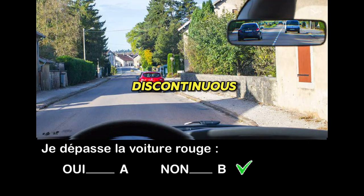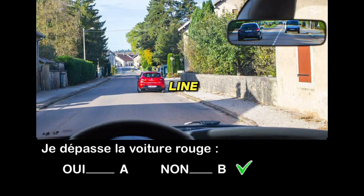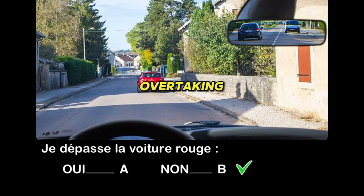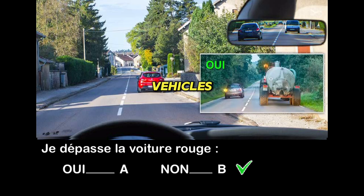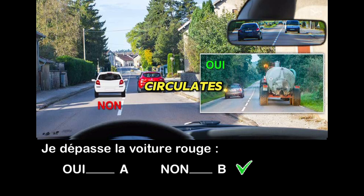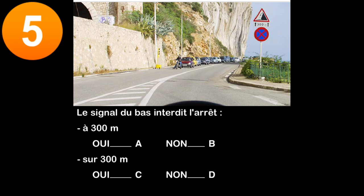Question four: do I pass the red car? Yes (A) or no (B)? The discontinuous line with tight strokes is a deterrent line drawn in dangerous places. It replaces a continuous line to allow the overtaking of very slow vehicles such as agricultural tractors. On the other hand, I must not overtake a vehicle that circulates normally. Therefore I stay behind the red car.